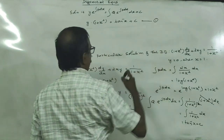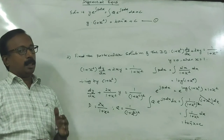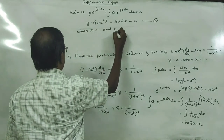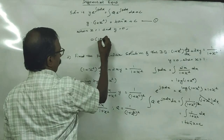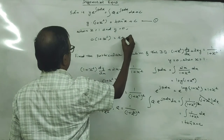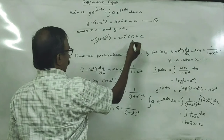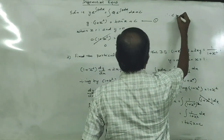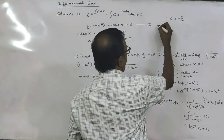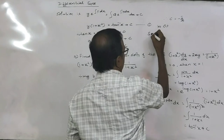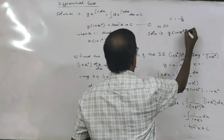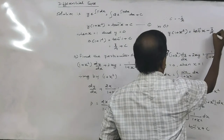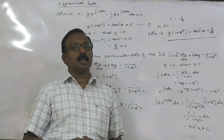But we have to find a particular solution when x = 1 and y = 0. Substituting: 0 · (1 + 1) = tan⁻¹(1) + c, so 0 = π/4 + c, therefore c = −π/4. Substituting back, the particular solution is y(1 + x²) = tan⁻¹x − π/4. This is the particular solution of the differential equation (1 + x²) dy/dx + 2xy = 1/(1 + x²).